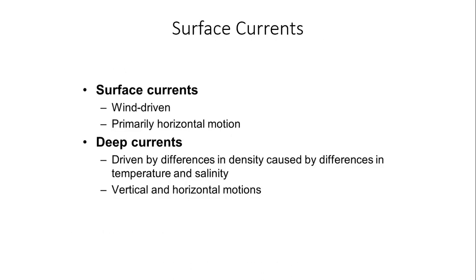The first thing I want to start off with is there's a difference between surface currents and deep currents. Surface currents are typically wind driven and their primary motion is horizontal. While deep currents are driven by differences in density, which is caused by changes in temperature and salinity. The deep currents include both vertical and horizontal motions in the ocean.